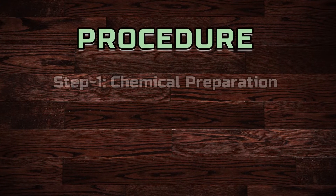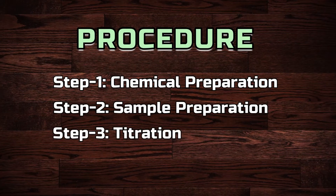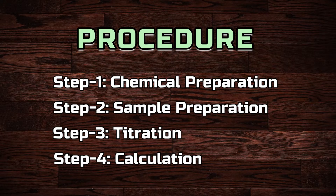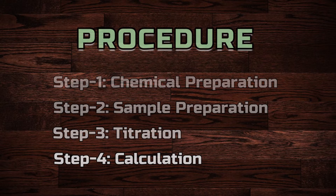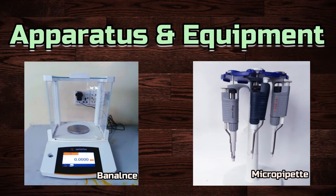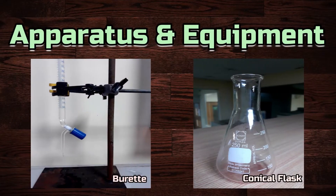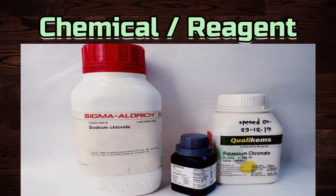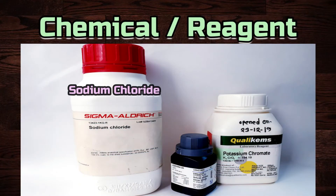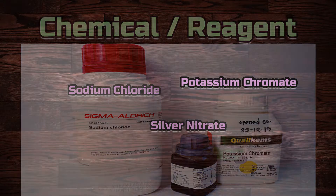We can analyze a sample for the sodium chloride content by following four steps: chemical preparation, sample preparation, titration, and calculation. To do the test, we need some apparatus and equipment, like a balance machine, micropipette, burette with stand, and conical flask. Among the chemicals and reagents we need sodium chloride, silver nitrate, and potassium chromate. Reagent grade chemicals should be used in this test to get accurate results.